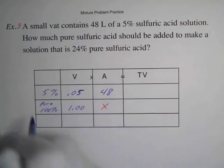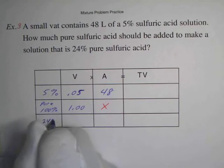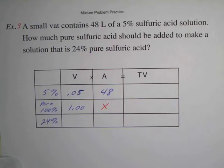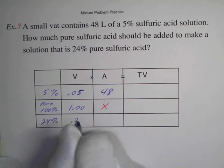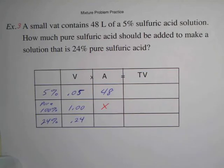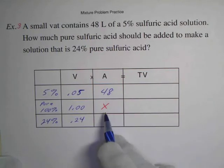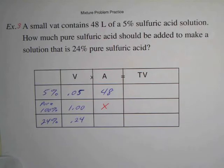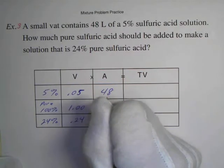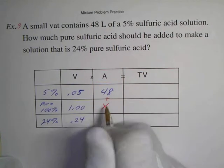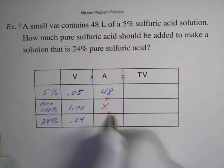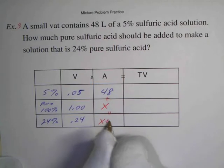And we want to end up with a solution that's 24%, so that value would be 0.24. So how much are we going to have? Well, we're going to have the original 48 liters plus the pure sulfuric acid we add. So these would add down. So the amount of the 24% solution I'm going to have will be x plus 48 liters.